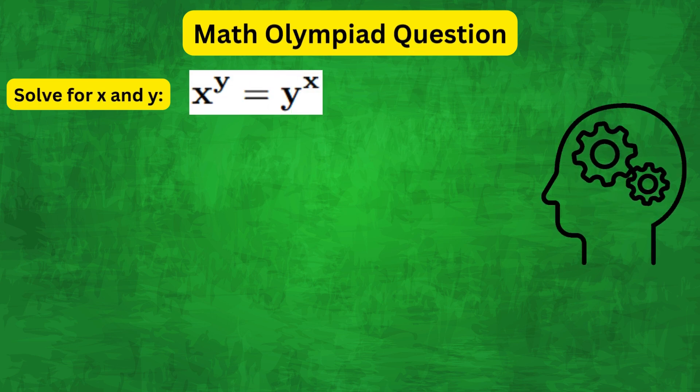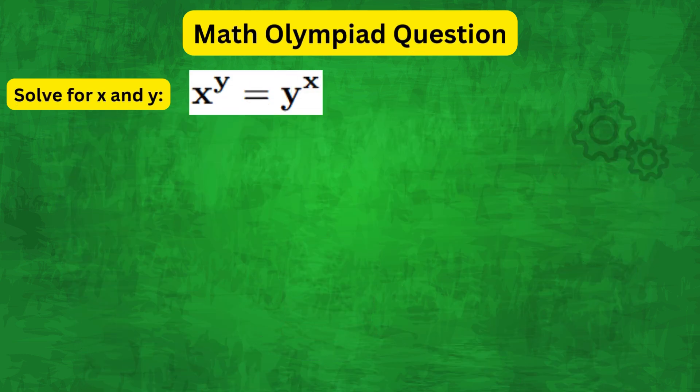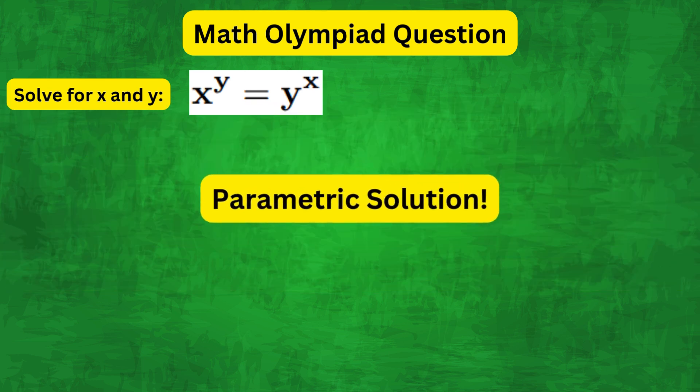We have this very interesting problem today, which requires a few mathematical tricks to solve correctly. So we've got the equation x to the y equals y to the x, and we want to find a parametric solution for x and y.